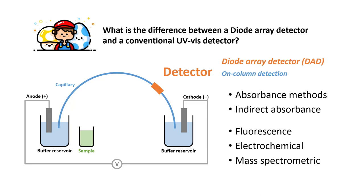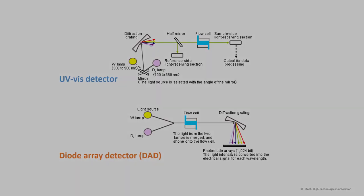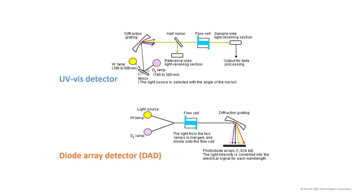What's the difference between a DAD detector and a conventional UV-Vis detector? In short, UV-Vis detector is like UV-Vis spectrometer. It can detect one wavelength at a time, while DAD detector can detect multiple wavelengths at one time. If you are interested in learning more about the DAD detector, do check out the link below.